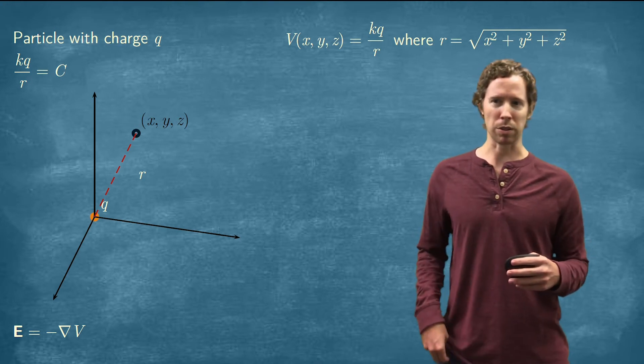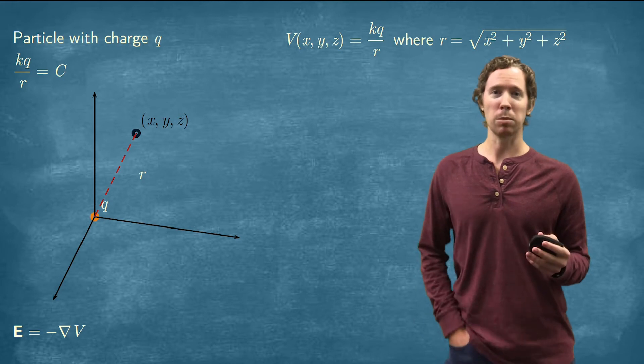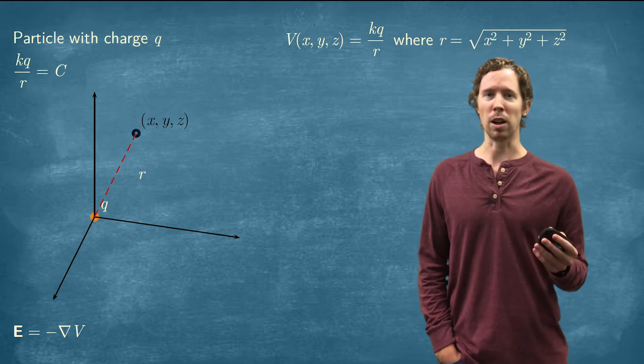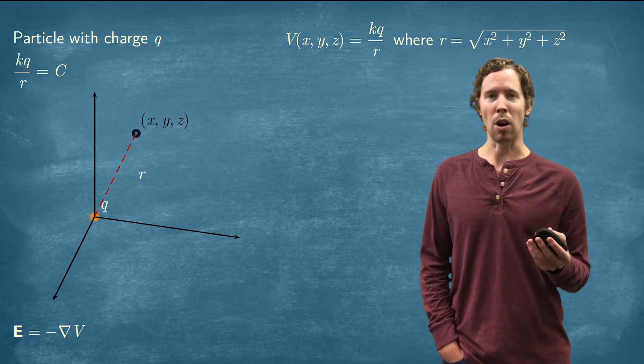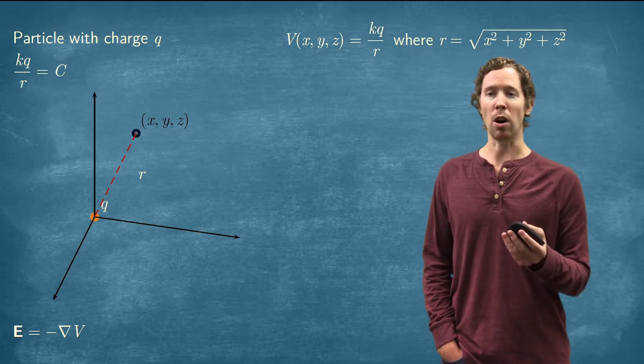So let's think about these surfaces. We've got K times Q over R equals some constant C. All of these are constants except for R. None of them depend on X, Y, or Z except R. So let's solve for R here.